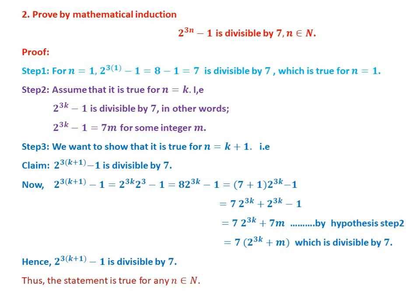Let us start from Step 1. For n = 1, substituting n = 1 into the statement: 2^(3×1) - 1 = 8 - 1 = 7. Since 7 is divisible by 7, this is true for n = 1.